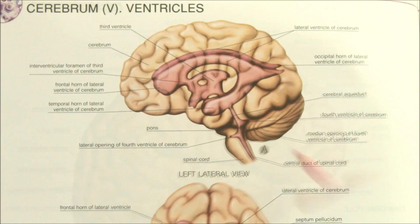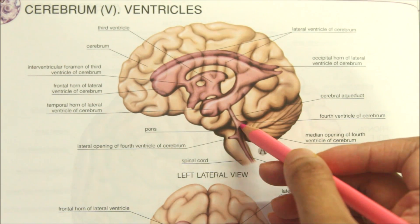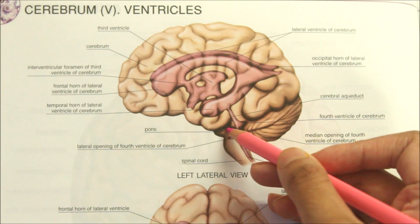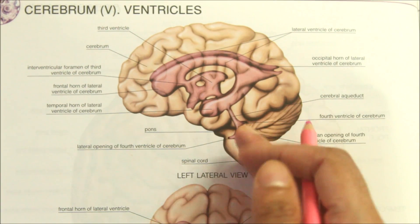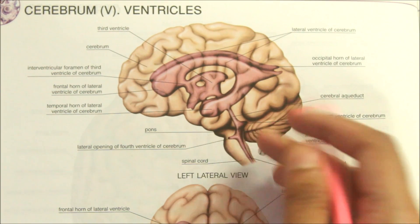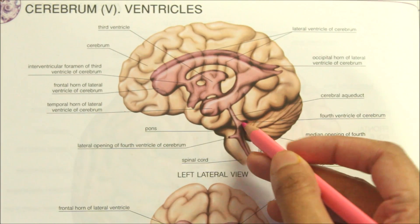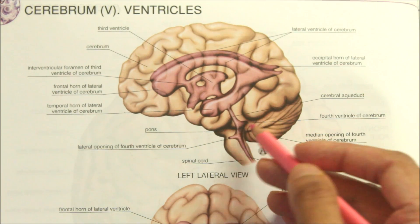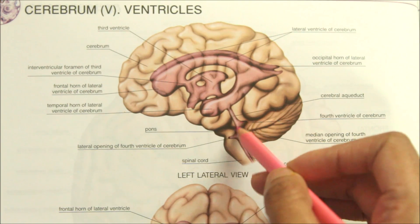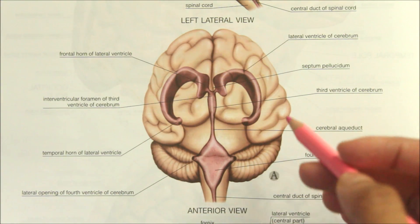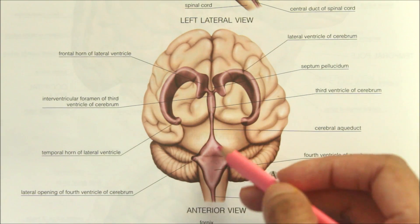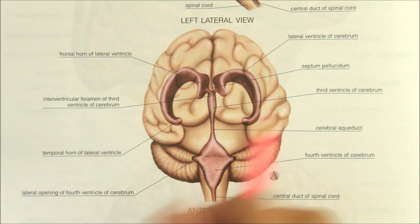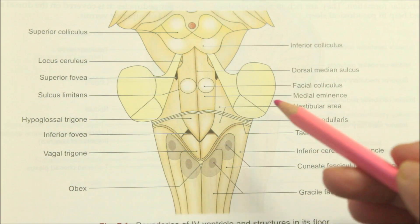The cavity of the hindbrain is called the fourth ventricle. It is a tent-shaped space situated between the pons and the upper part of the medulla oblongata in front, and the cerebellum behind. So the fourth ventricle lies dorsal to the pons and the upper part of the medulla, and ventral to the cerebellum. It has lateral boundaries, a floor, a roof, and a cavity.